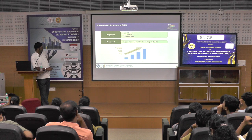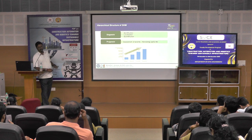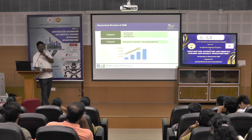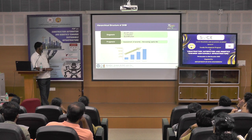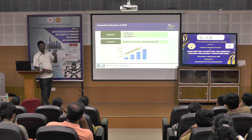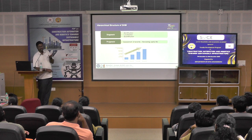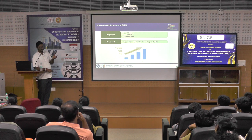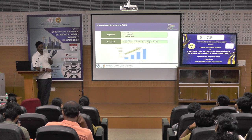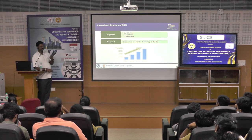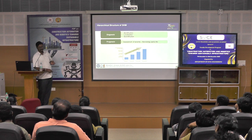In SHM, we go from diagnosis to prognosis. Diagnosis is finding that there is a defect or problem in the structure. Localization identifies which part of the bridge has the problem or damage. Quantification determines how much damage has occurred — for example, in a bridge connection with 10 bolts, whether 2 or 3 bolts have sheared or been damaged due to corrosion, or whether rivets are failing.